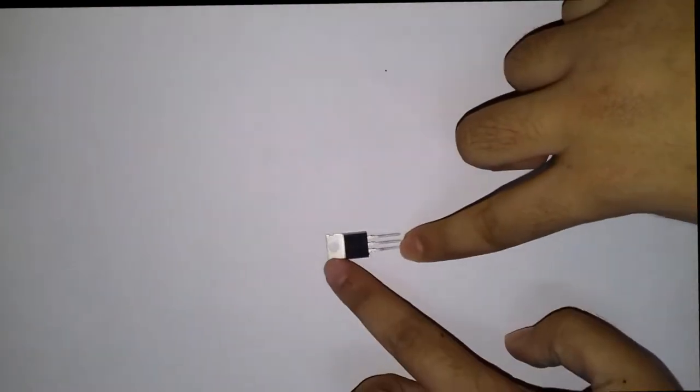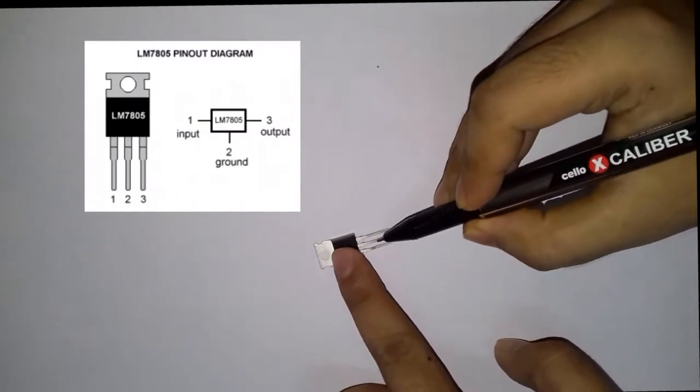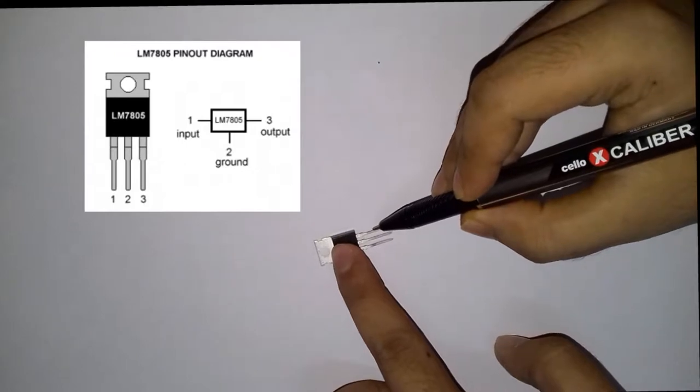This is IC7805 voltage regulator. Pin number one is input pin, pin number two is ground pin, pin number three is output pin.